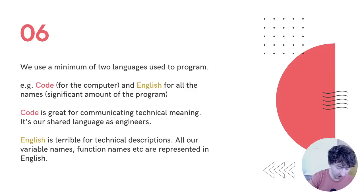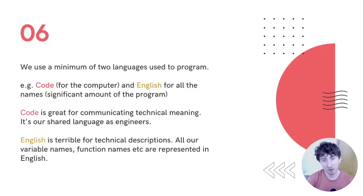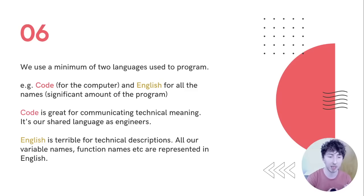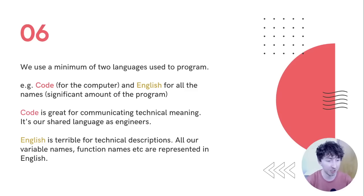Something you might not have thought about: if you're writing a program in Rust, you're probably thinking all you're using is Rust. But every time we write a program, we're actually always using a minimum of two languages. We're using a programming language to communicate with the computer — Rust in this case — and the vast majority of the time we're also using a human language, like English, for all of the names in the program.